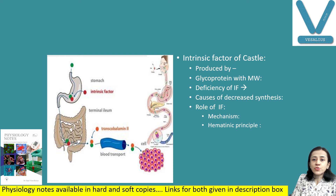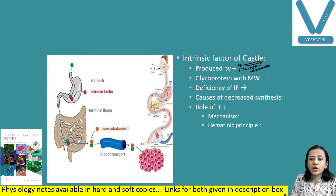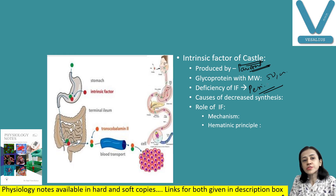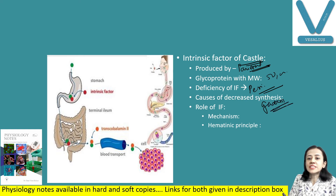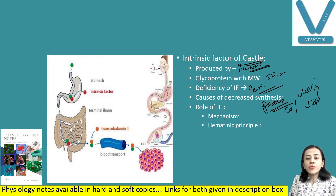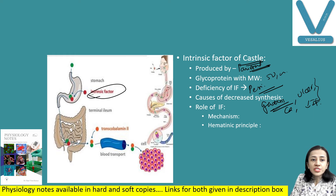The intrinsic factor, also known as the intrinsic factor of Castle, is produced by parietal cells of the gastric mucosa. It is a glycoprotein with a molecular weight of about 50,000. Deficiency of intrinsic factor also produces pernicious anemia because it is required for absorption of vitamin B12. Causes of decreased intrinsic factor include gastritis, stomach ulcers, or carcinoma. One molecule of intrinsic factor binds with one molecule of vitamin B12; this complex passes through the stomach without being digested.